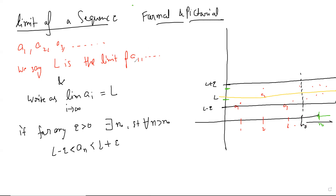When we say 'for any epsilon,' we mean for each and every epsilon. For each epsilon, there will be some N-naught. This is logically a strange statement because it quantifies over all real numbers, which is an uncountable set. The idea is: as close as you want to get — if you want to get epsilon-close — you can do so by going far enough down in the sequence. Epsilon is a small real number.